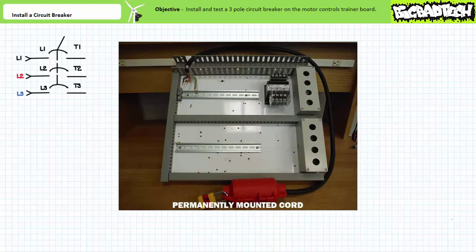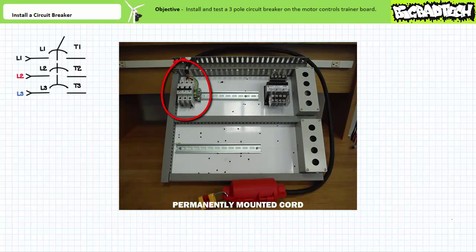Alternatively if you are making use of a motor control trainer board with a permanently mounted cord that does not make use of an initial set of terminal blocks you can directly route phase L1, L2, and L3 to the circuit breaker and land the neutral and ground connection to the board using an additional set of terminal blocks on the right hand side.